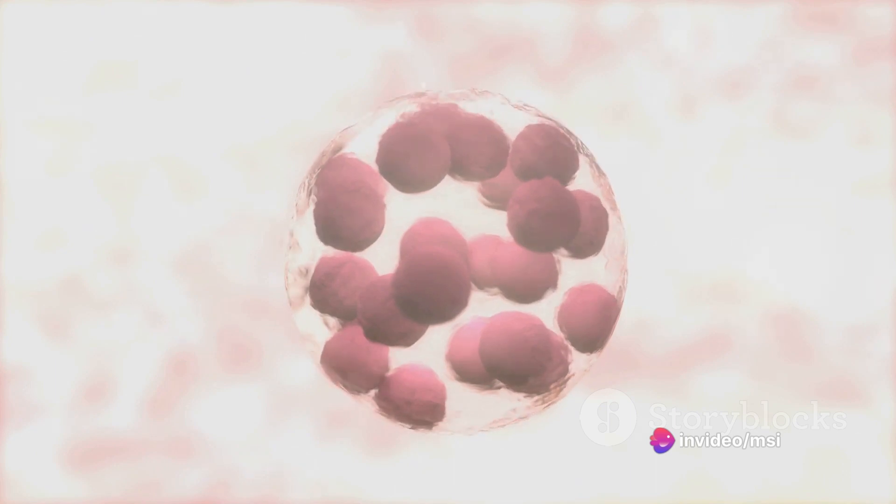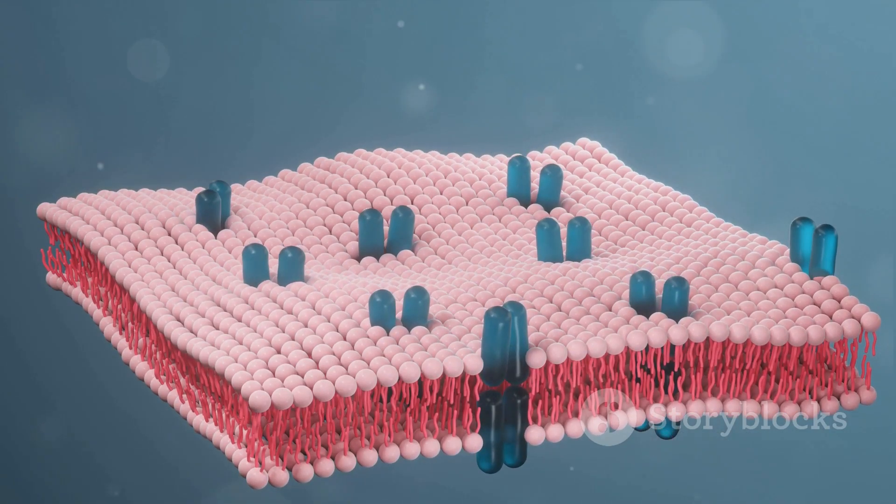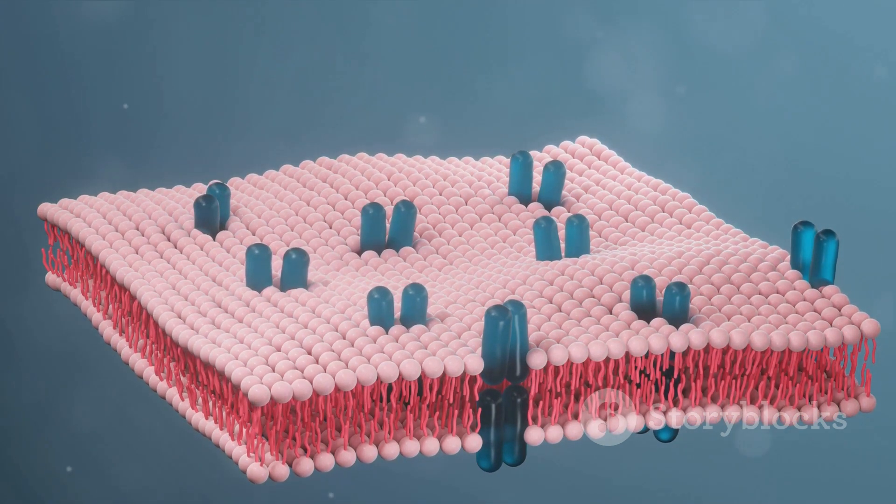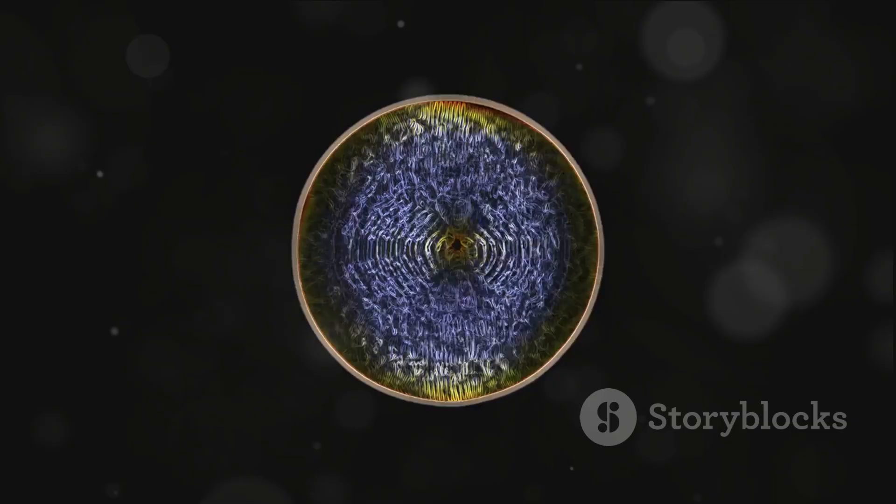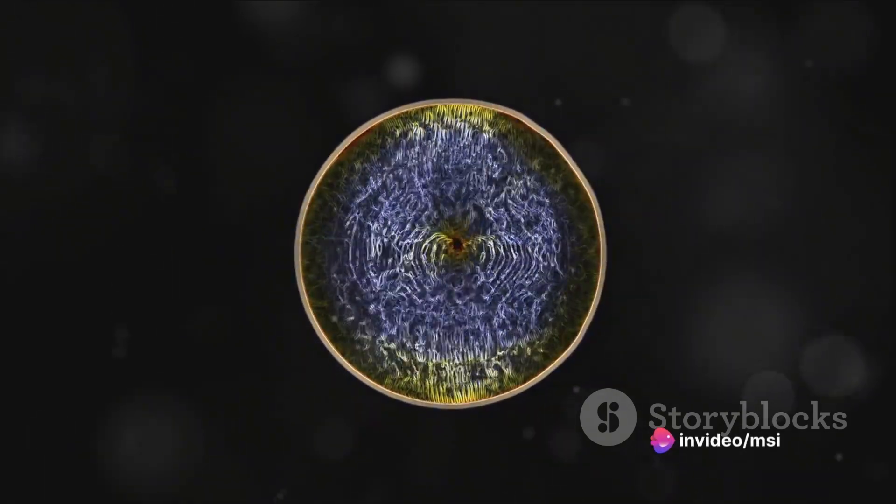Much like a city, the cell is enclosed by a membrane, akin to city walls. This membrane diligently guards the cell, controlling what comes in and what goes out, much like city gates. It ensures that essential nutrients enter, while waste products are shown the exit.